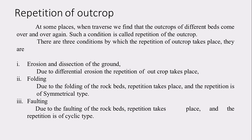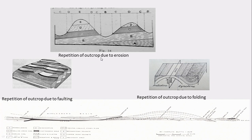The first image shows repetition of outcrop due to erosion. Consider a low-dipping rock with beds A, B, C, D where rock strength varies — some beds are harder and resist erosion, others softer and erode easily. When traversing, you encounter bed C, then D, then E, then D again, then C, then B, then C again, then D — a pattern like C, D, E, D, C, B. The same bed type appears repeatedly. This repetition is caused by erosion due to differences in rock strength.